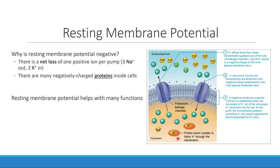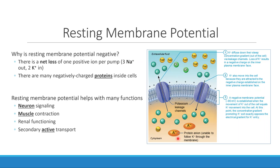We have to have a resting membrane potential for a variety of reasons, and all the cells in your body have one. Resting membrane potential is critical to functions like allowing neurons to talk to each other, enabling your muscles to contract, and allowing kidney cells to filter things. We also use the resting membrane potential to power the process of secondary active transport — where we have to have started with a difference in charge to be able to do this kind of transport.